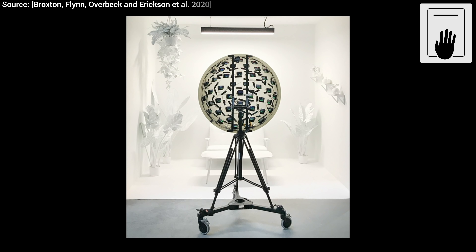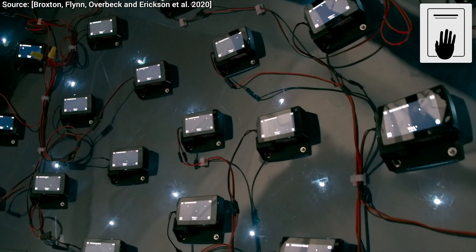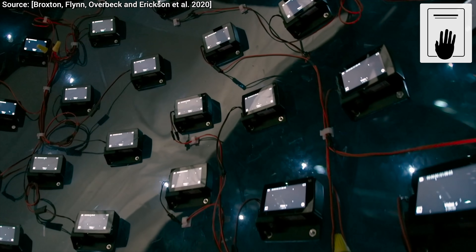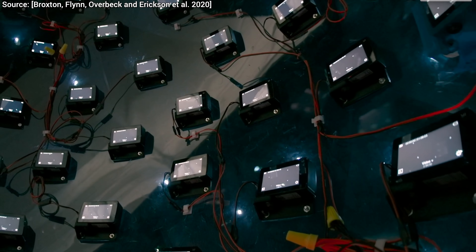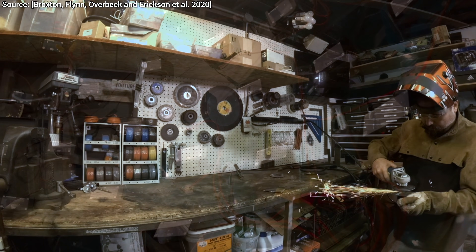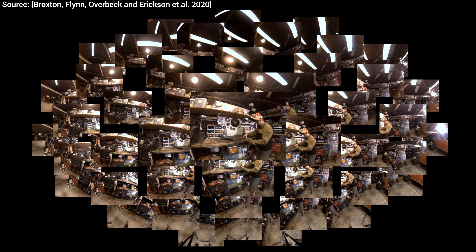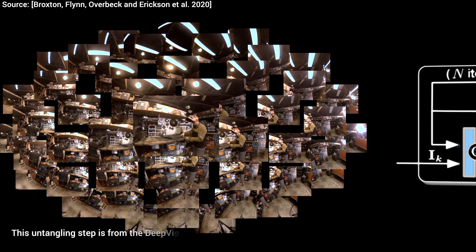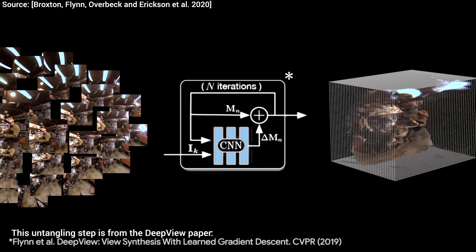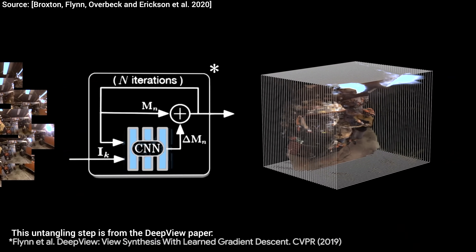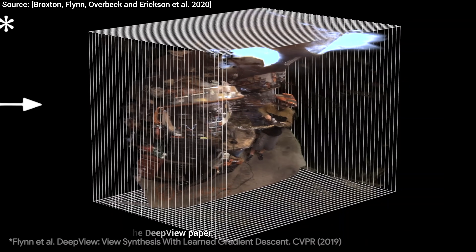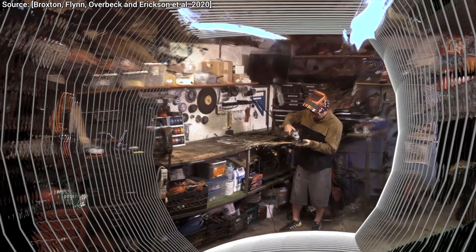Well, hold on to your papers, because this technique shows us the images of the future, by sticking a bunch of cameras onto a spherical shell, and when we capture a video, it will see something like this. And the goal is to untangle this mess — we also need to reconstruct the geometry of the scene as if the video was captured from many different viewpoints at the same time.